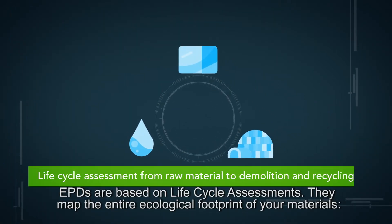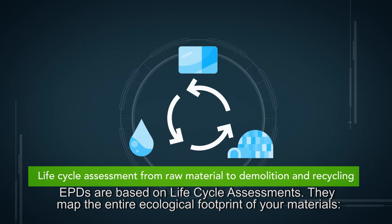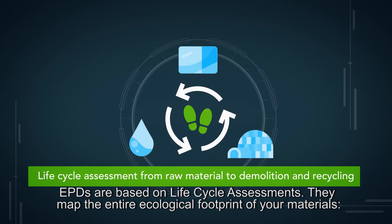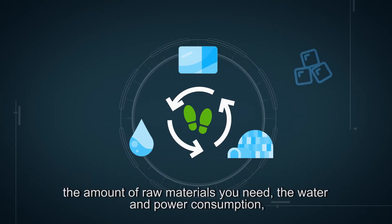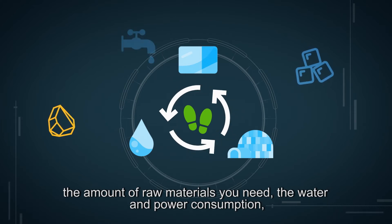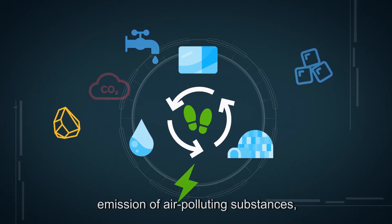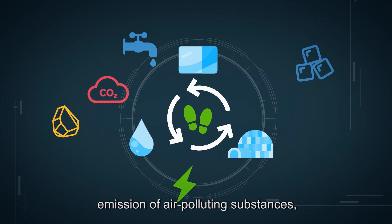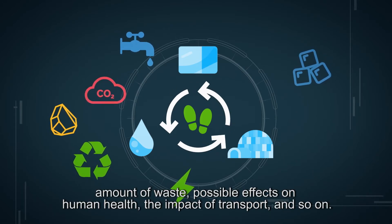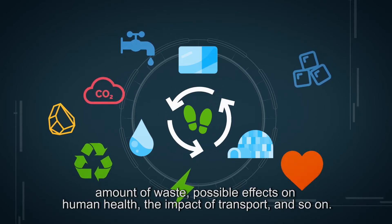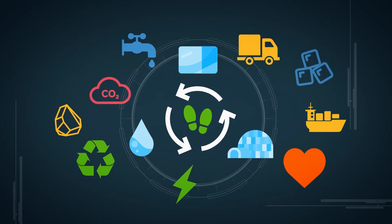EPDs are based on life cycle assessments. They map the entire ecological footprint of your materials: the amount of raw materials you need, the water and power consumption, emission of air polluting substances, amount of waste, possible effects on human health, the impact of transport, and so on.